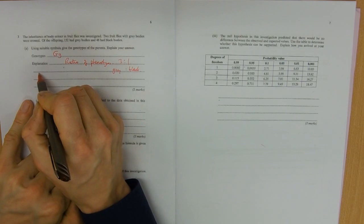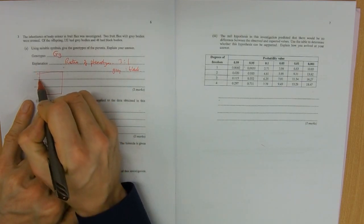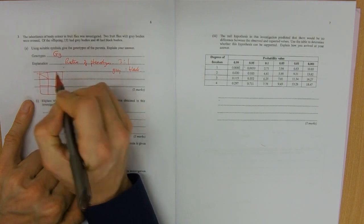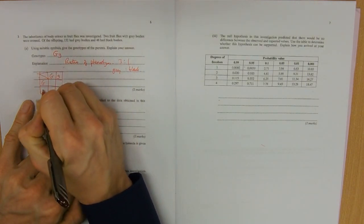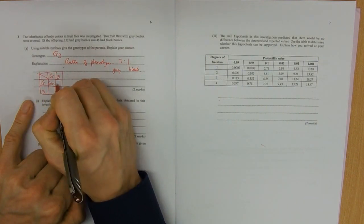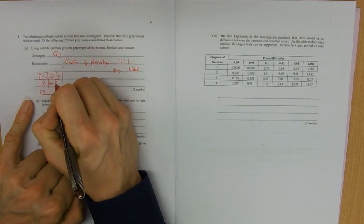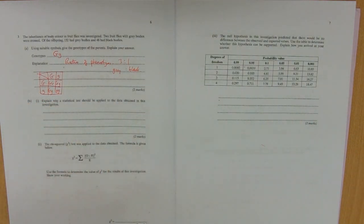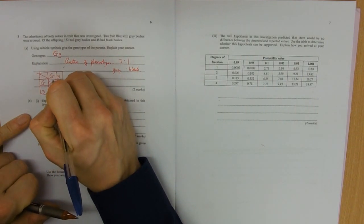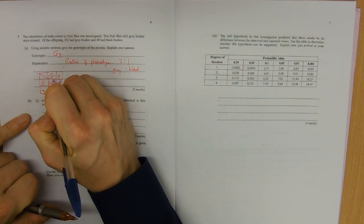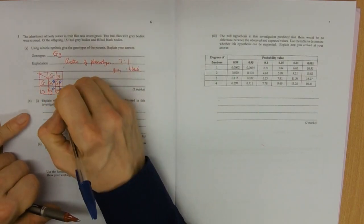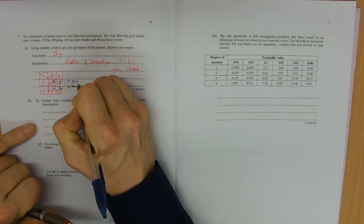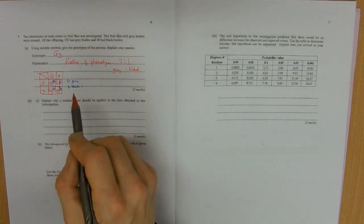We could have given a little Punnett square. There's our parents. These are the gametes. That is a grey, that one's a grey, that one's a grey and that one's a black. And that would be an explanation as well.